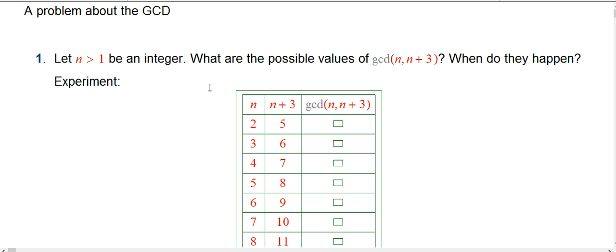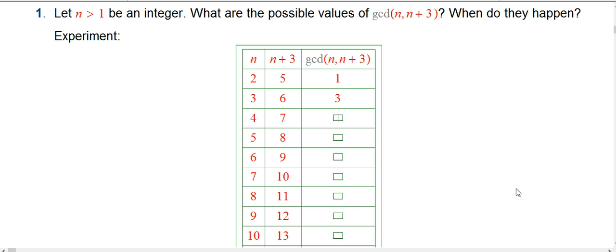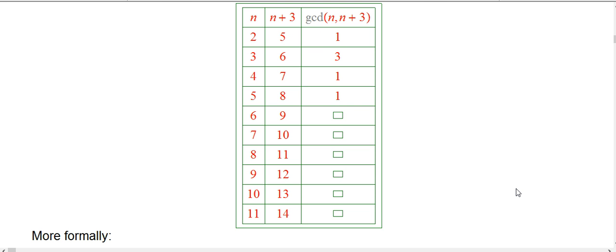So it's a good opportunity to experiment with small numbers, find a pattern, and then step back and formalize it. If n is 2, n plus 3 is 5, the GCD of 2 and 5 is 1. They're relatively prime. 3 and 6 have common factor 3. 4 and 7 are relatively prime. 5 and 8 are relatively prime. 6 and 9 have common factor 3. 7 and 10 are relatively prime. 8 and 11 are relatively prime. 9 and 12 have common factor 3. 10 and 13 are relatively prime. 11 and 14 are relatively prime.